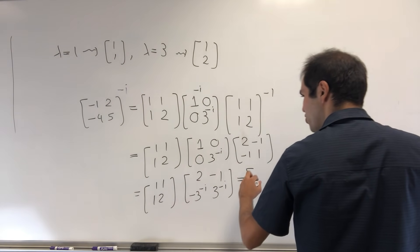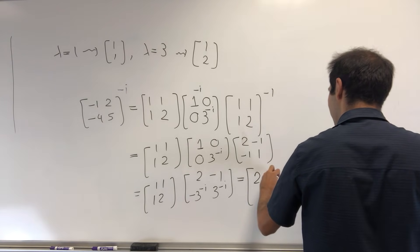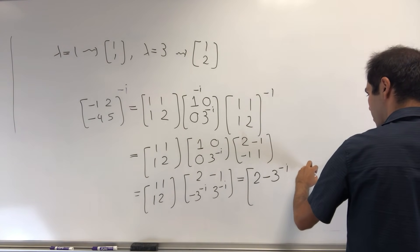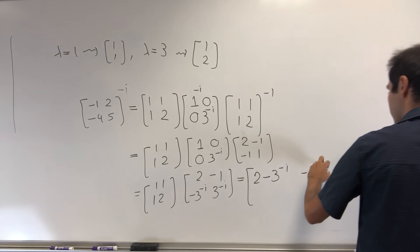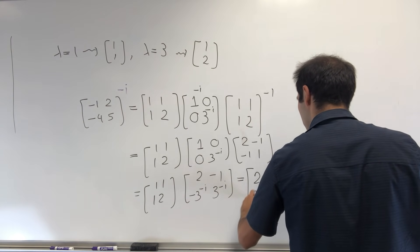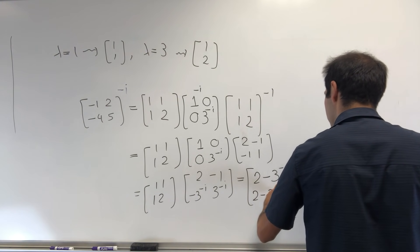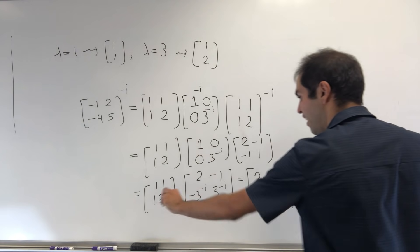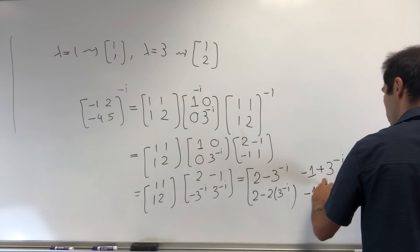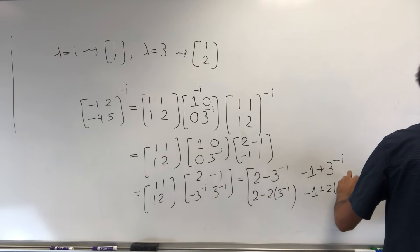So this becomes [2 - 3^(-i), -1 + 3^(-i); 2 - 2·3^(-i), -1 + 2·3^(-i)].